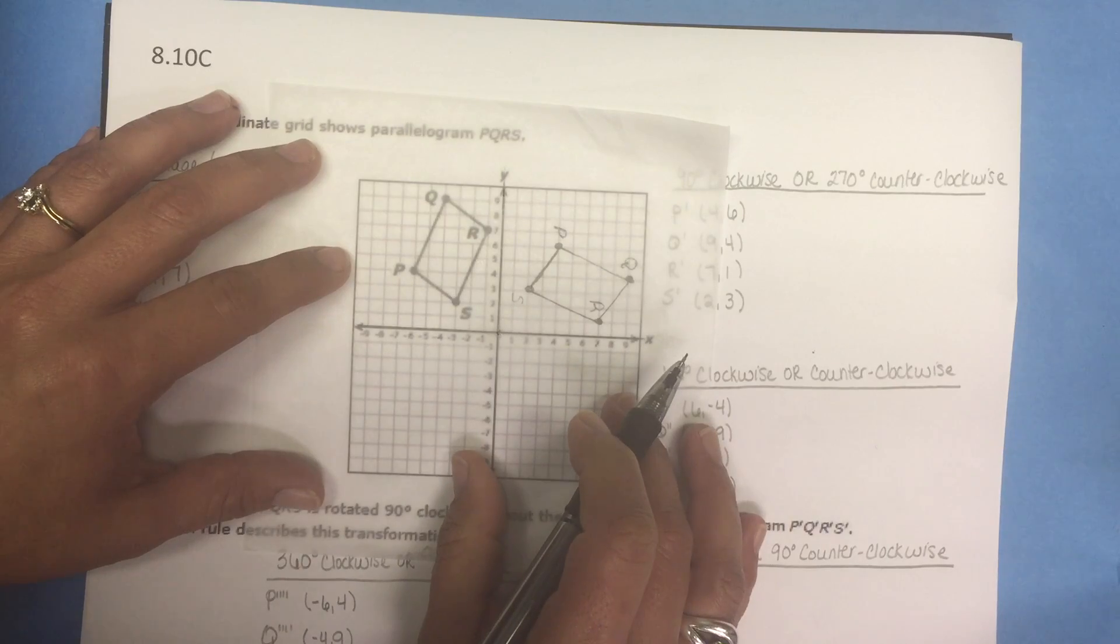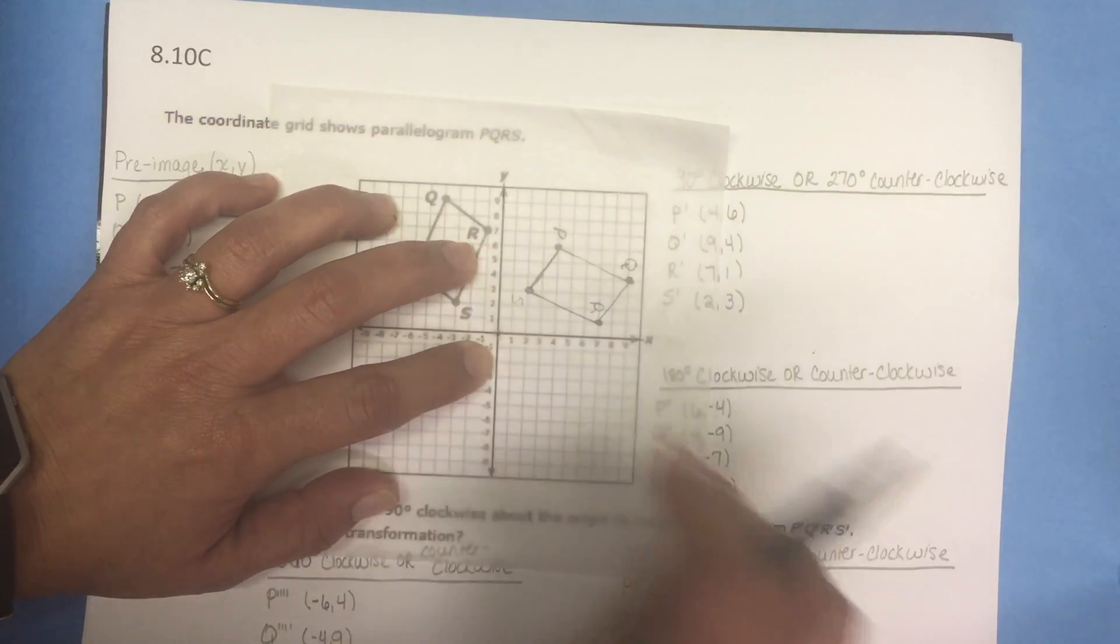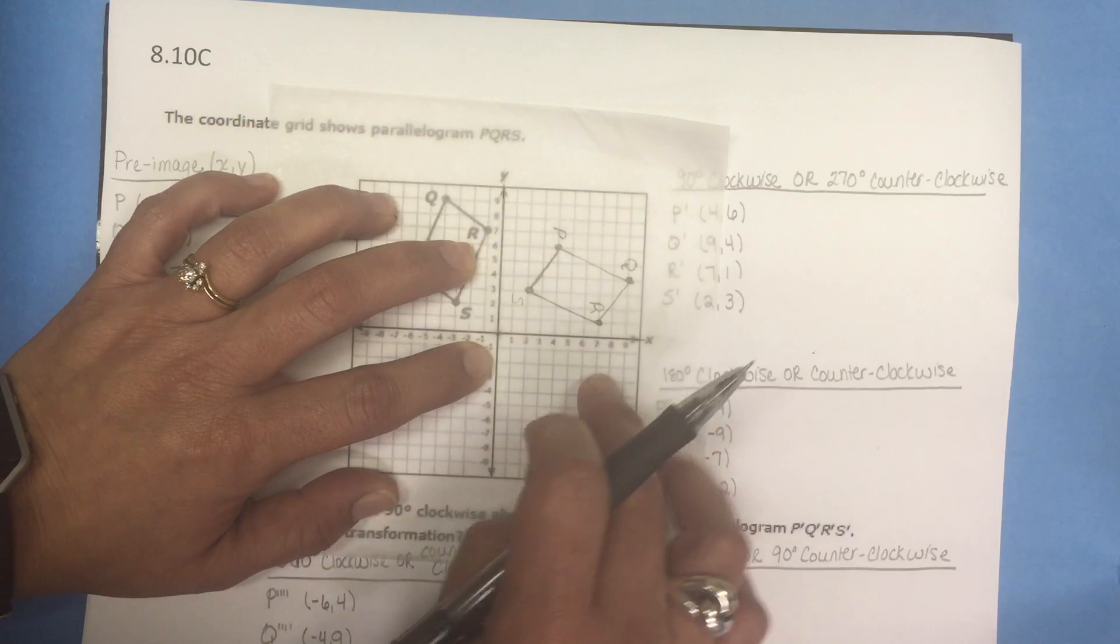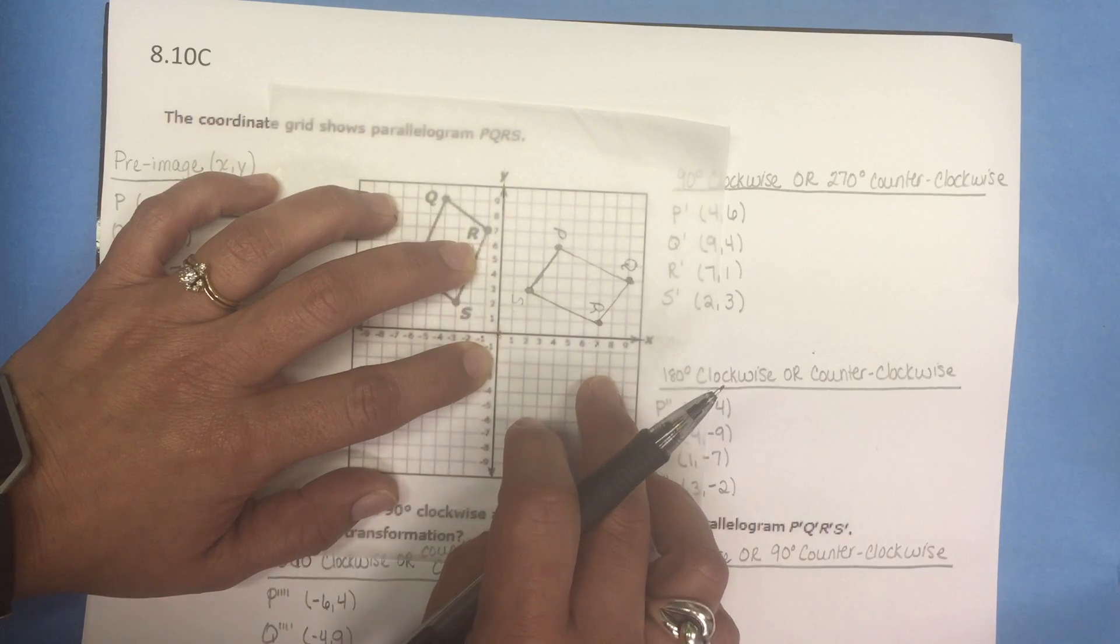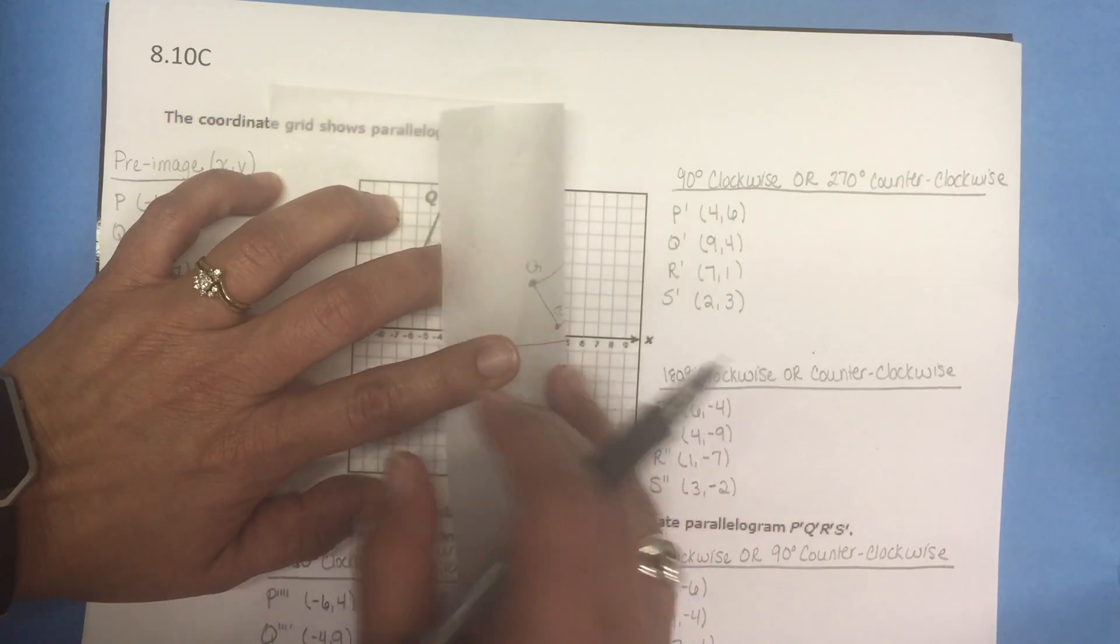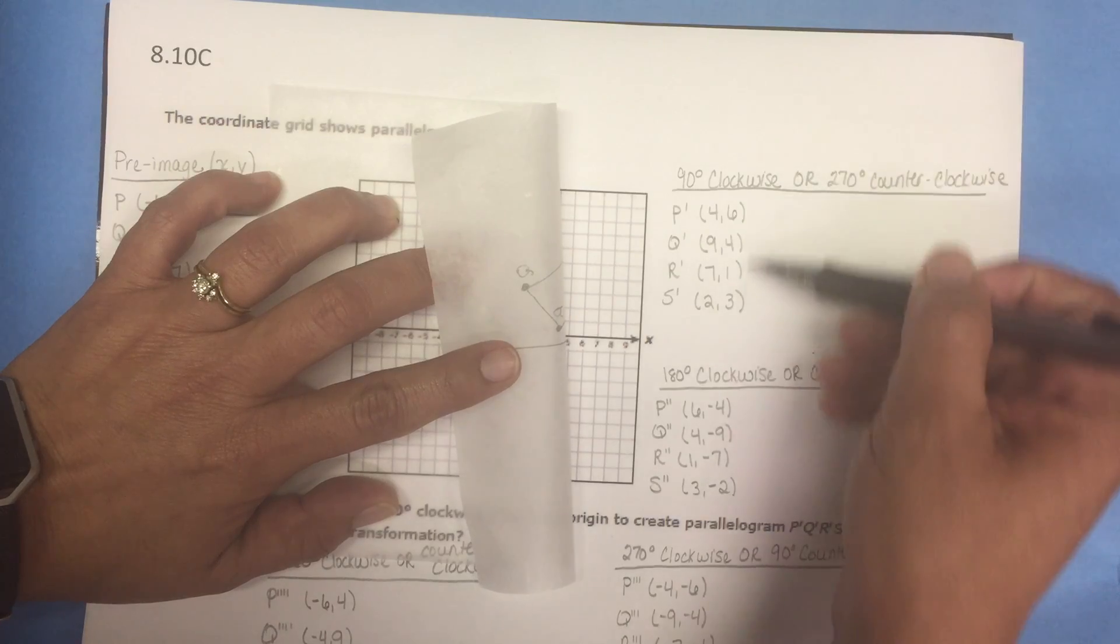And I'm gonna rotate 90 degrees clockwise. And I'm gonna stop right here and now we see where the transformed figure would lie with a 90 degree rotation clockwise.